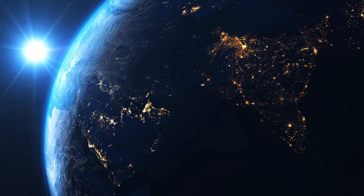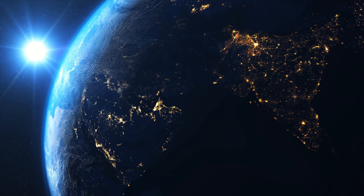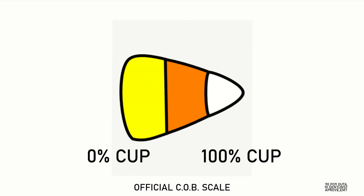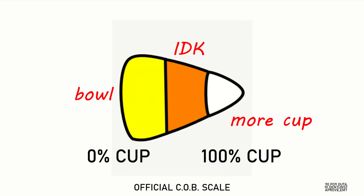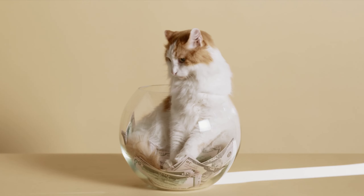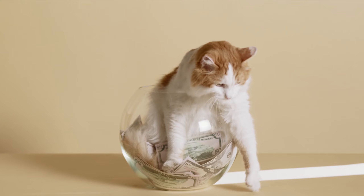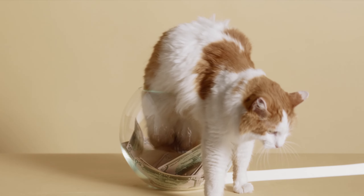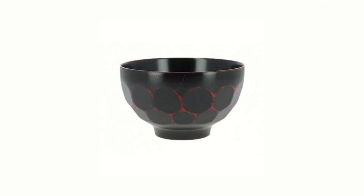With this revolutionary technology you'll be able to determine whether something is a cup or not in no time at all. Here's what the COB scale looks like: bowl on the left, the center is the 'I don't know' region, and the closer to the right it is, the more it's a cup. Anywhere in that middle region, it's anyone's best guess. So on the left, how do we know it's a bowl? When you look at a bowl you can kind of tell — it's like a round, crater-looking thing.